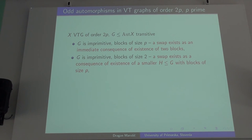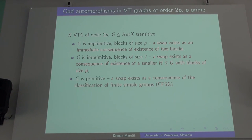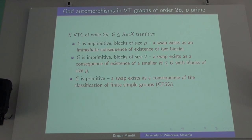For the case of P blocks of size 2, this comes from an older result of mine: all such graphs can be represented as those having 2 blocks of size P. If G has blocks of size 2, then it must contain a subgroup H which has blocks of size P, and then this group H itself will contain odd automorphisms, and therefore G will also contain odd automorphisms. The primitive case cannot be done independently of the classification of finite simple groups — there is no classification-free proof of this fact, even though it seems a simple one. But the classification tells you that P equals 5 is the only example of a primitive transitive group of degree twice a prime, giving you the Petersen graph.